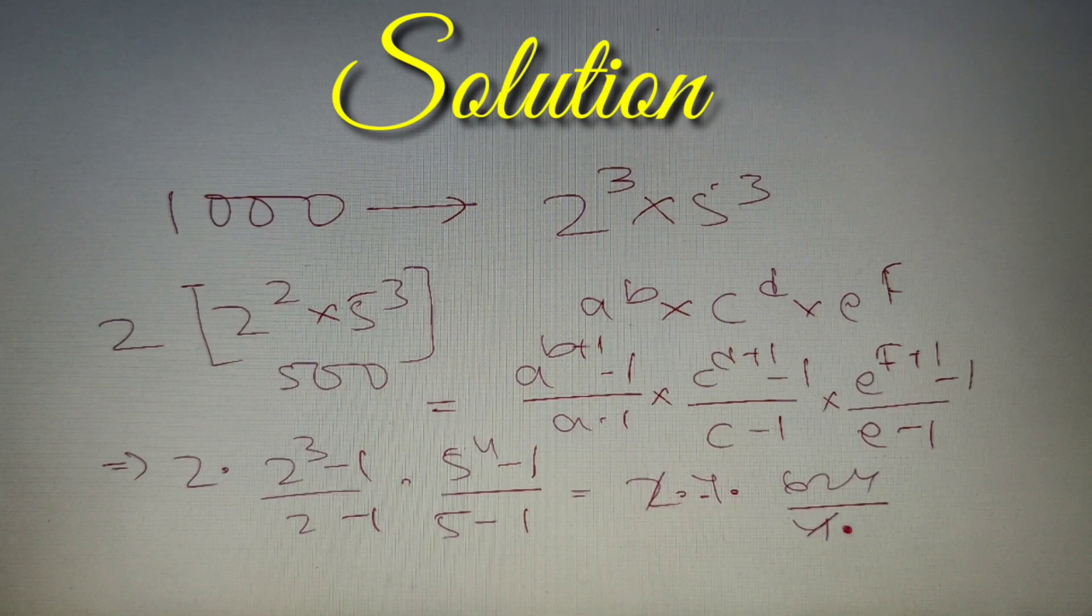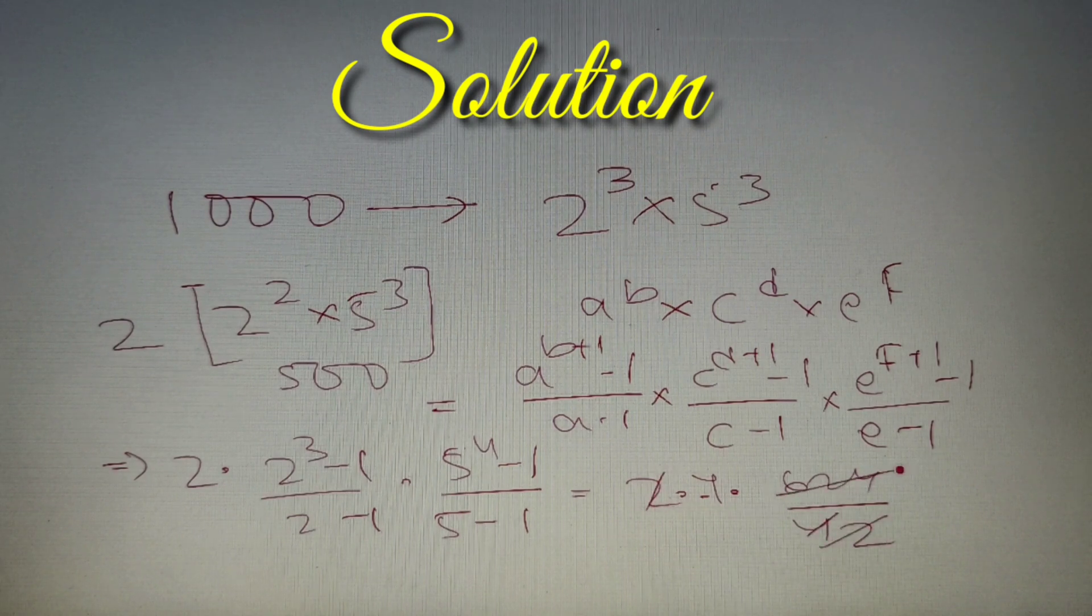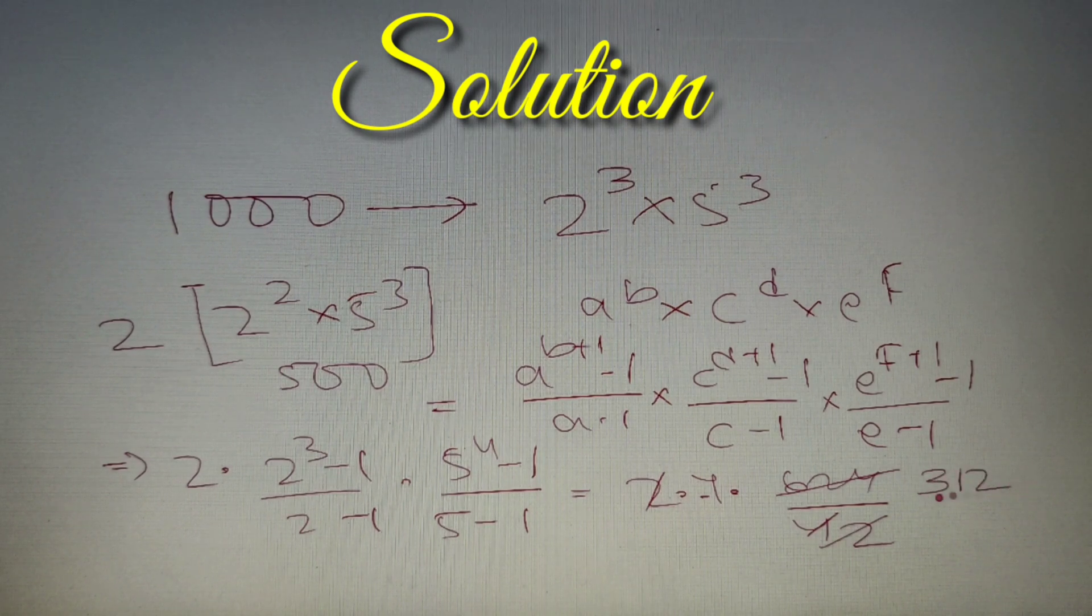Now this 2 and this 4 will get cancelled and we'll get 2 in the denominator, and 2 and 624 will get cancelled and we'll simply get 312 in the numerator.